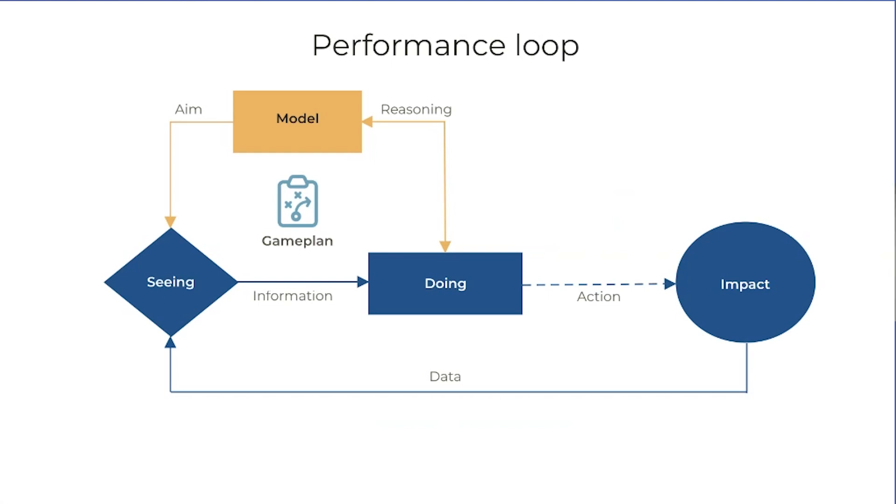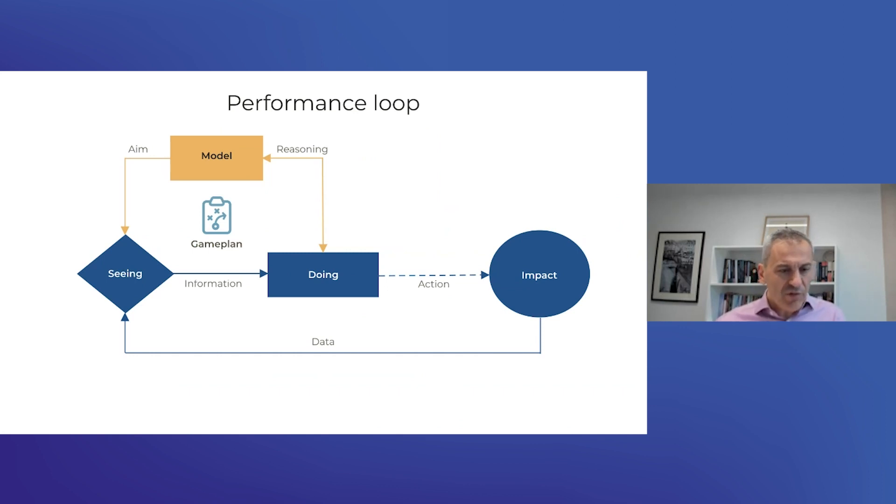Information is data interlaced with an implicit model of what we're trying to do. I call that a game plan very loosely, and that defines what we see as important information and also affects the way that we reason.